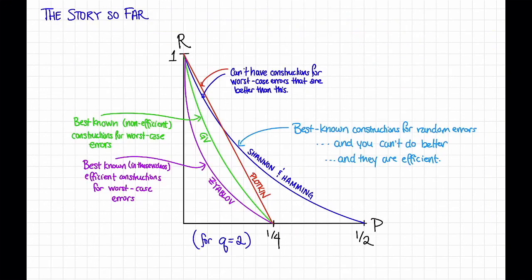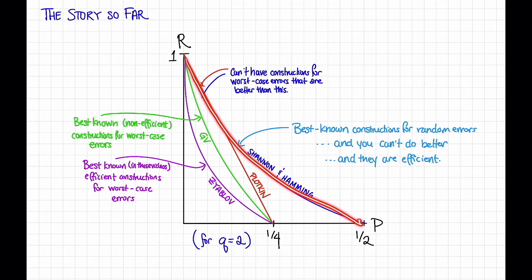To summarize, what does this mean for the status of decoding on the binary symmetric channel? The story is much nicer and cleaner for random errors than for worst-case errors, at least for binary codes. For worst-case errors, we have various impossibility results, a possibility result with non-efficient algorithms, and another with efficient algorithms — all different. For random errors, we have Shannon's theorem, which is simultaneously an impossibility result, a possibility result, and an efficient possibility result. That is, Shannon's theorem says you can't do better than this rate-error tradeoff, and we just showed we can get explicit constructions with efficient algorithms that lie on this tradeoff.